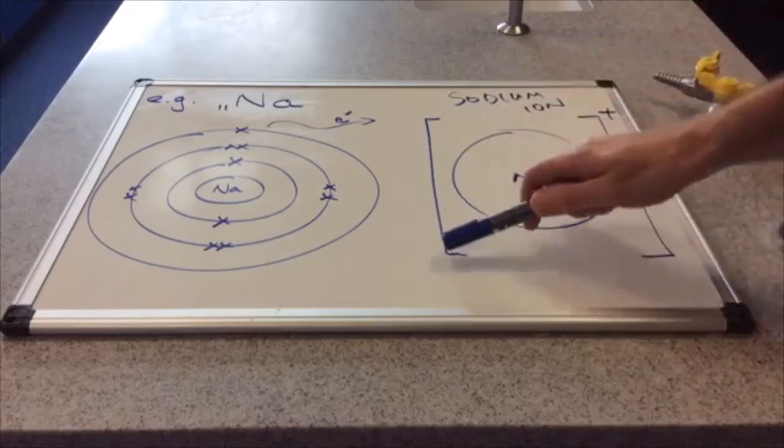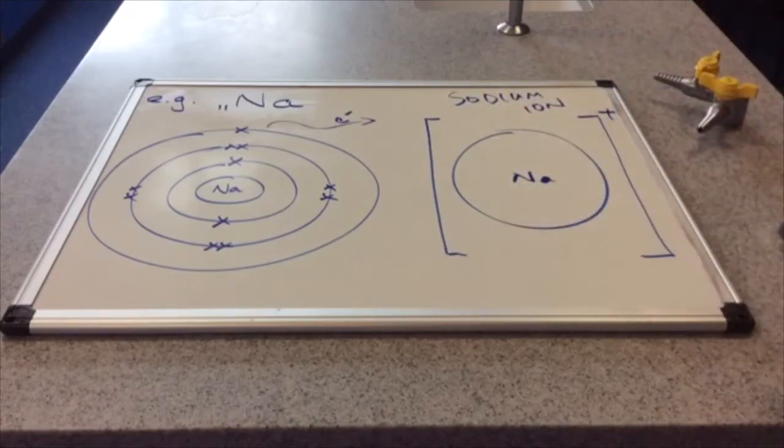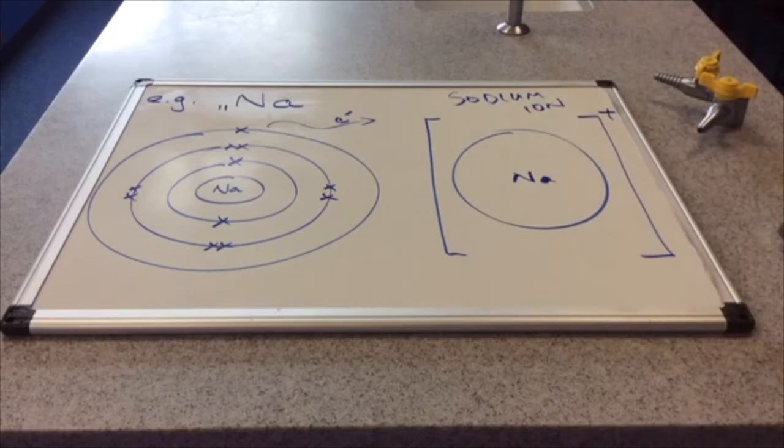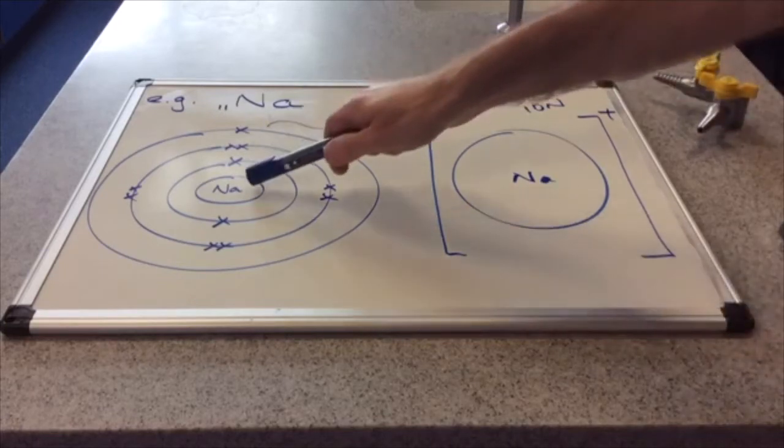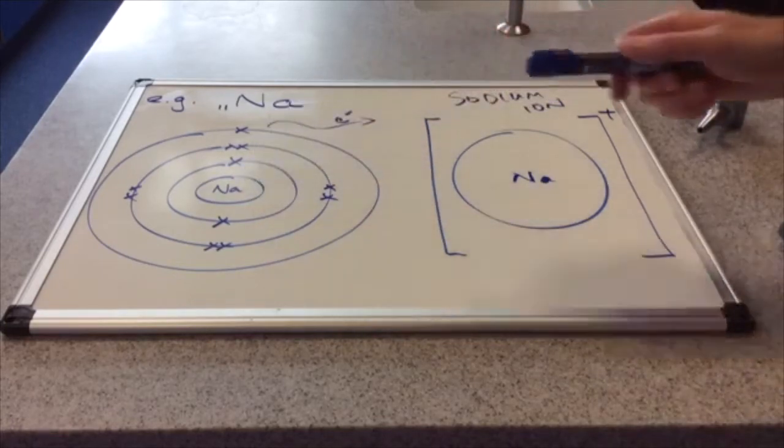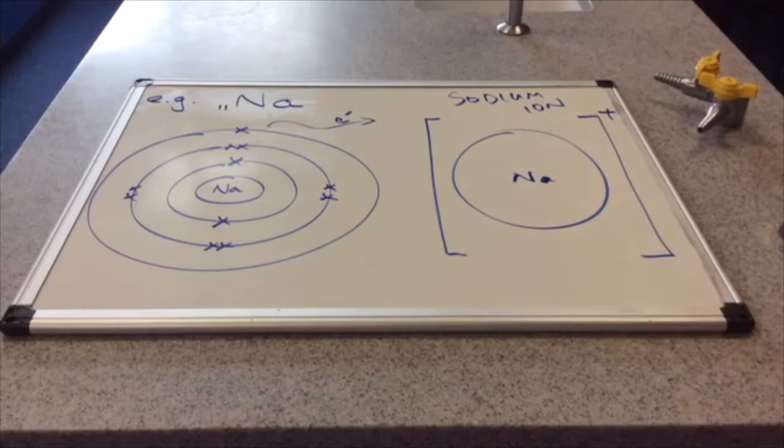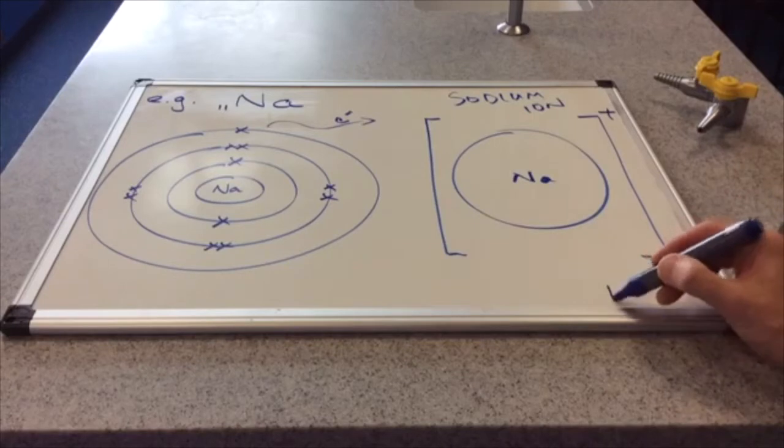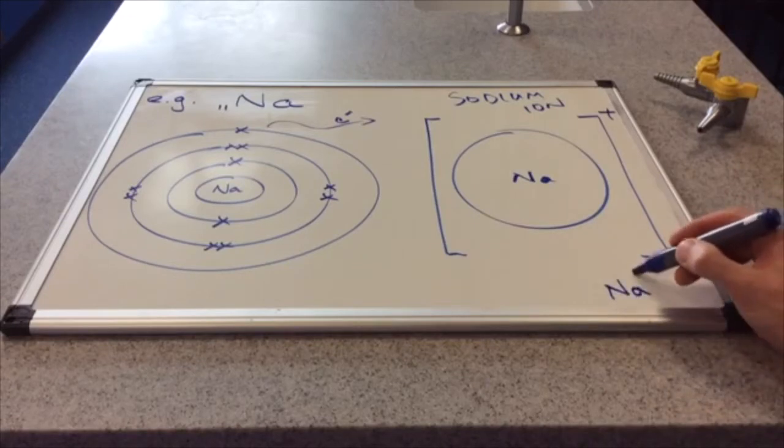Ions are always put into square brackets, and there's the charge there in the top right-hand corner. It's a one plus ion because it's lost one negatively charged electron. So it still has 11 protons in its nucleus, but it now only has 10 electrons. So it's got 11 pluses and 10 minuses, and therefore it has an overall charge of 1 plus. And the formula of the sodium ion is obviously just Na+.